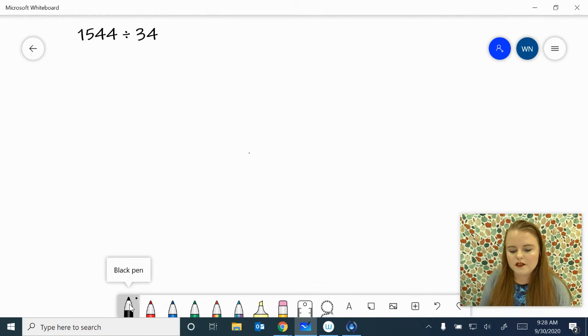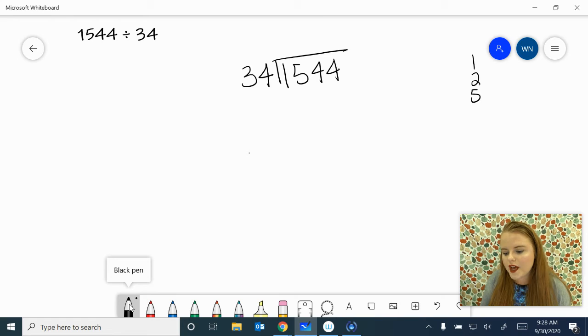1,544 divided by 34. Again, I'm going to think about my friendly numbers. I've got 1, 2, 5, 10, 20, 50. 34 is a pretty small number, and 1,544 is a pretty big number. So I'm going to multiply by 50 and see what happens.